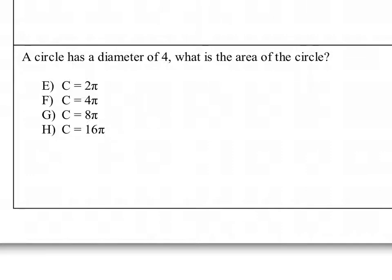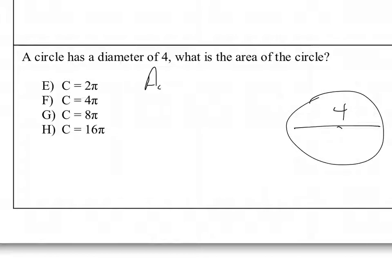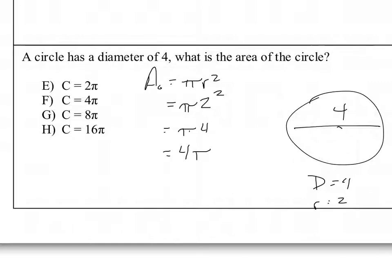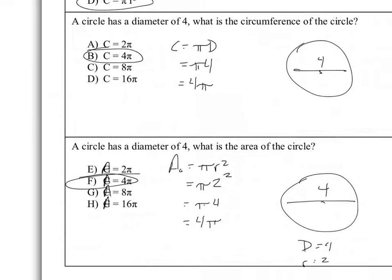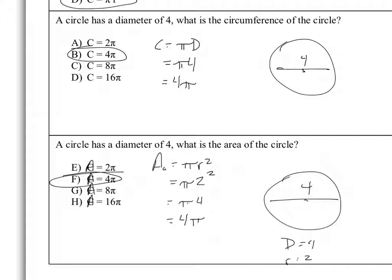And finally, we have a circle with a diameter of 4 — same circle, diameter of 4. This asks for the area of the circle. Area equals π times radius squared. The diameter is 4, so the radius is 2. So π times 2 squared, which is π times 4, which is 4π. So we get answer choice F. We can see that in this particular problem they happen to be the same.